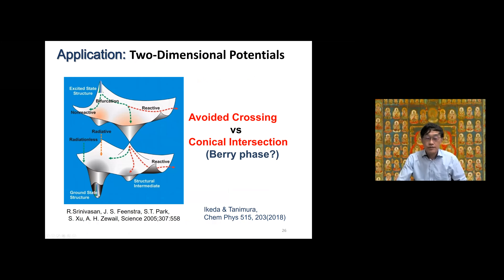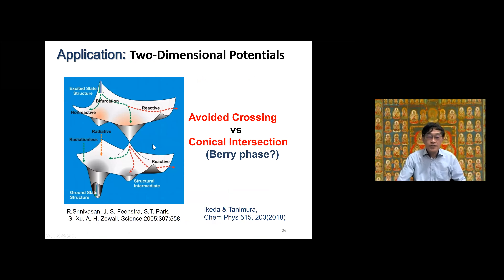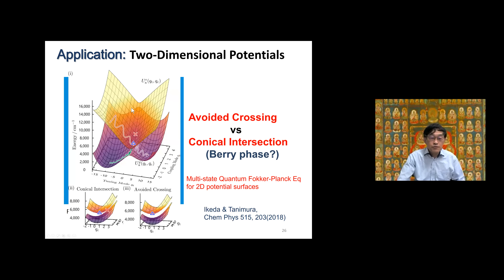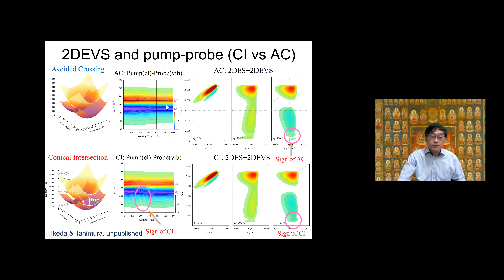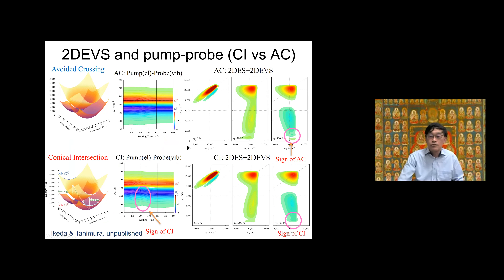The interesting dynamics involves two-dimensional potential surfaces — avoided crossings and conical intersection surfaces. This is computationally very expensive, but we are gradually reaching this capability. For two-dimensional potential surfaces, one with conical intersection and one with avoided crossing, we can calculate pump-probe and 2D electronic/vibrational spectra. This work is still unpublished — Dr. Ikeda moved to another position before we finished — but we can now do it.